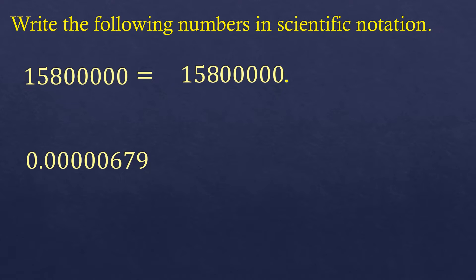We're going to move the decimal point up to the last non-zero digit. So let's move the decimal point to the left: 1, 2, 3, 4, 5, 6, 7. It's only up to the last non-zero digit, which is 1, so it will be placed at the right side of 1. Now we're going to remove the zeros, retaining those non-zero numbers, including any zeros in between non-zero digits.